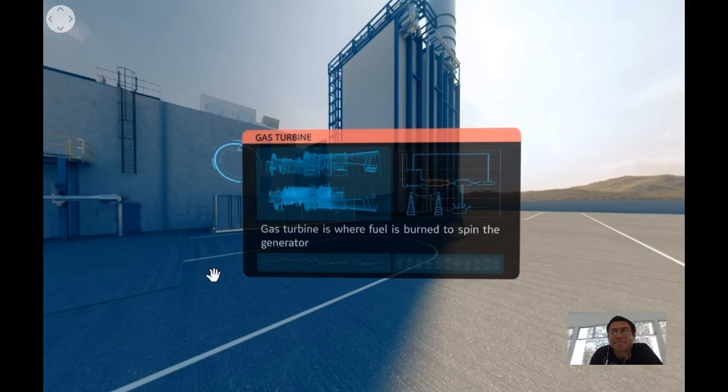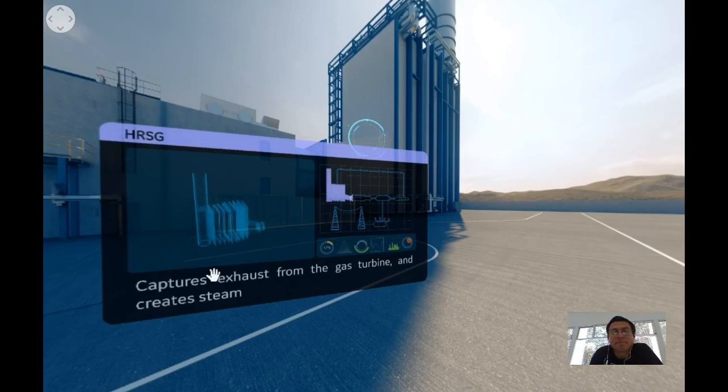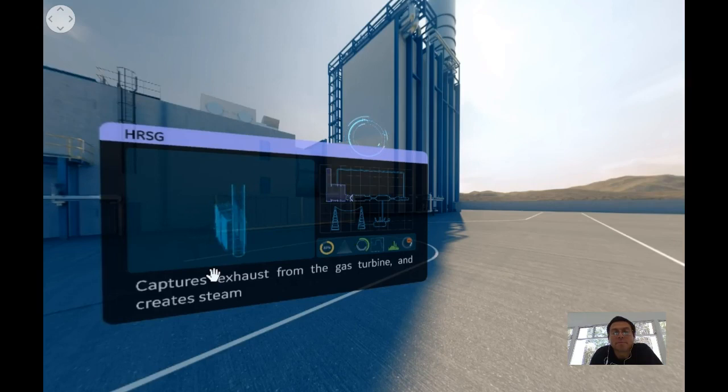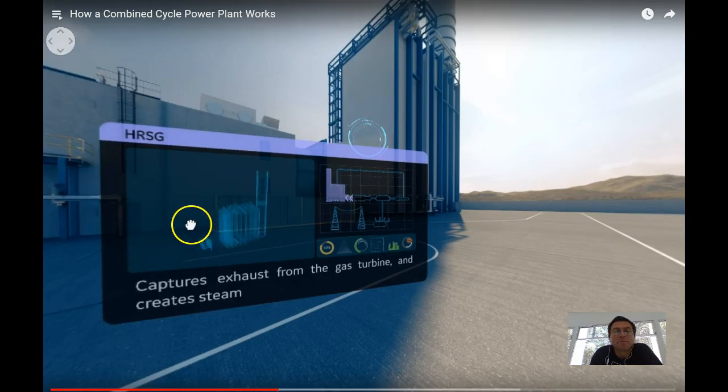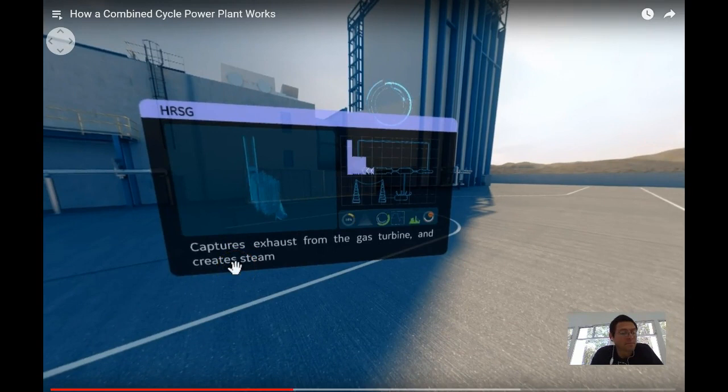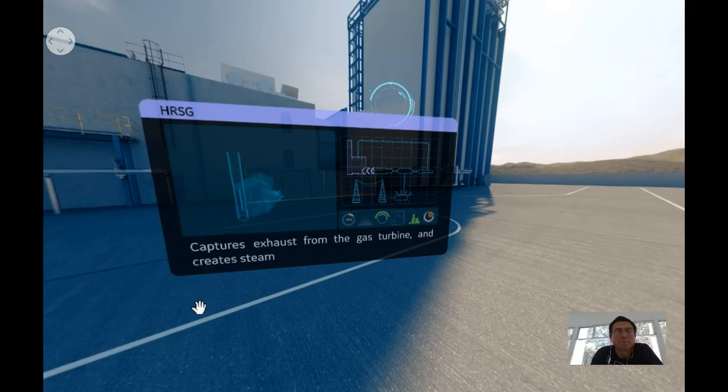Behind the gas turbine you can see another key component, the heat recovery steam generator, HRSG. Its mission is to capture exhaust heat from the gas turbine that would otherwise escape through the exhaust stack. Thanks to the captured exhaust heat, the HRSG generates steam where it is then delivered to a steam turbine, making even more electricity.